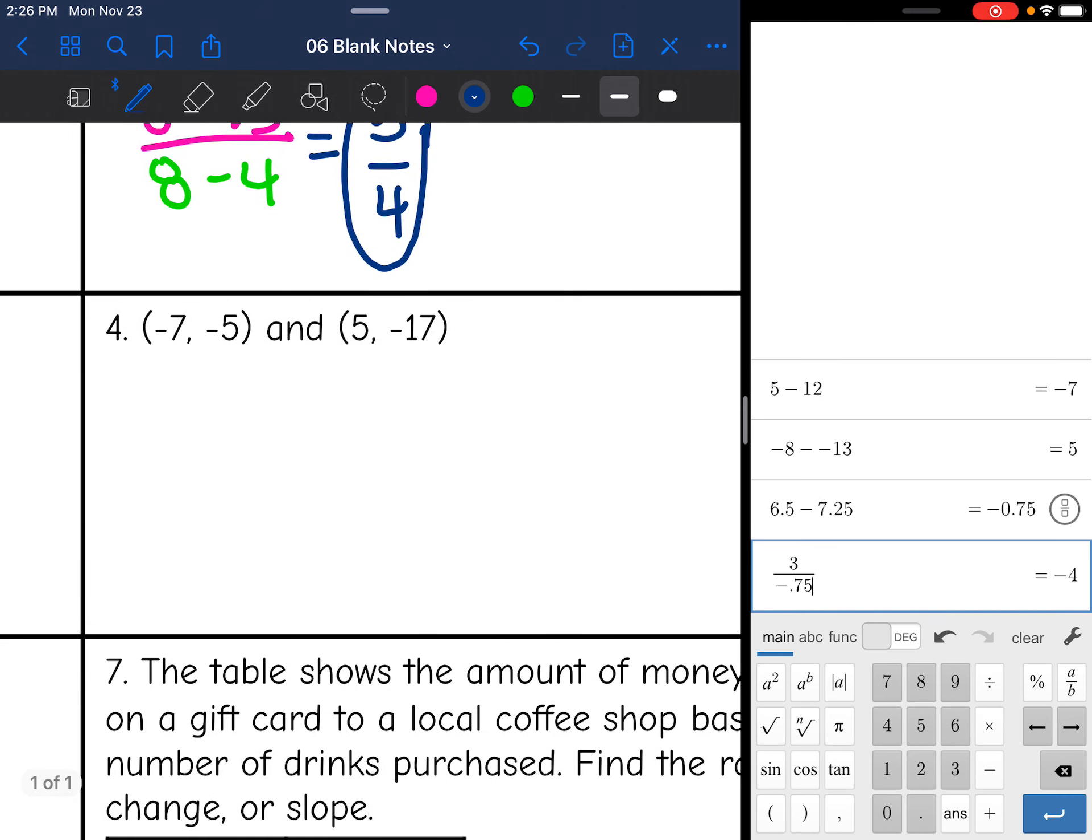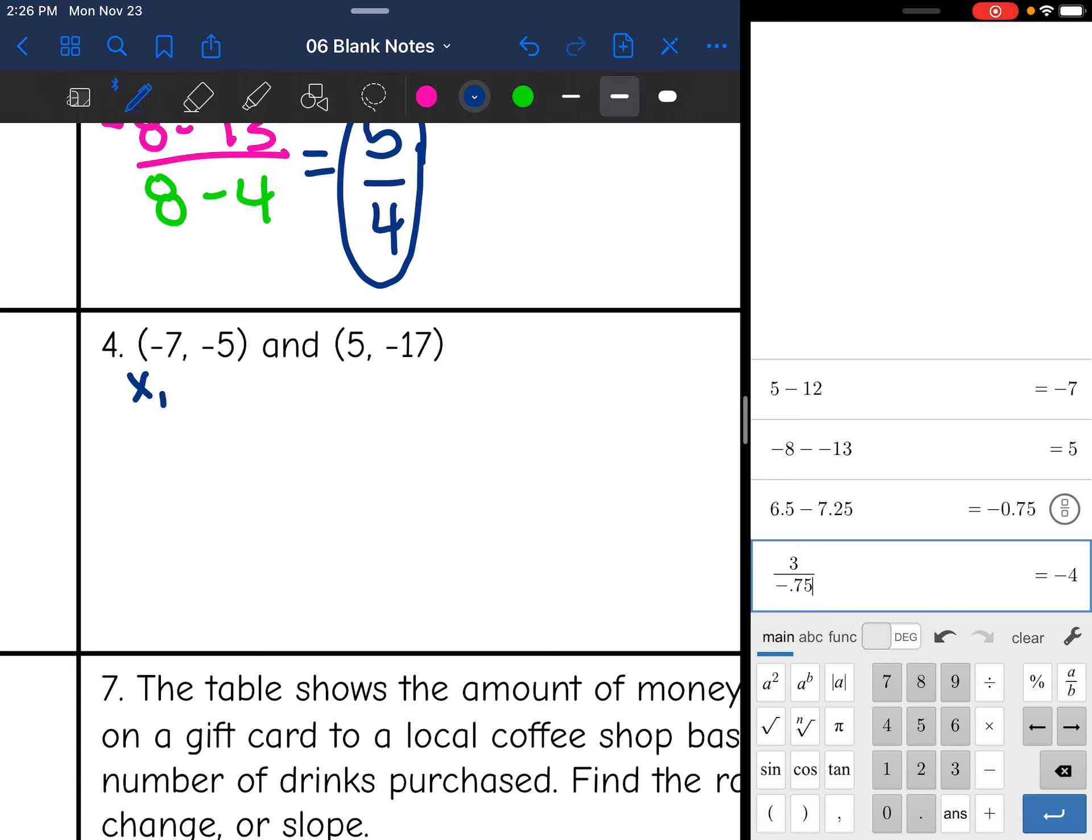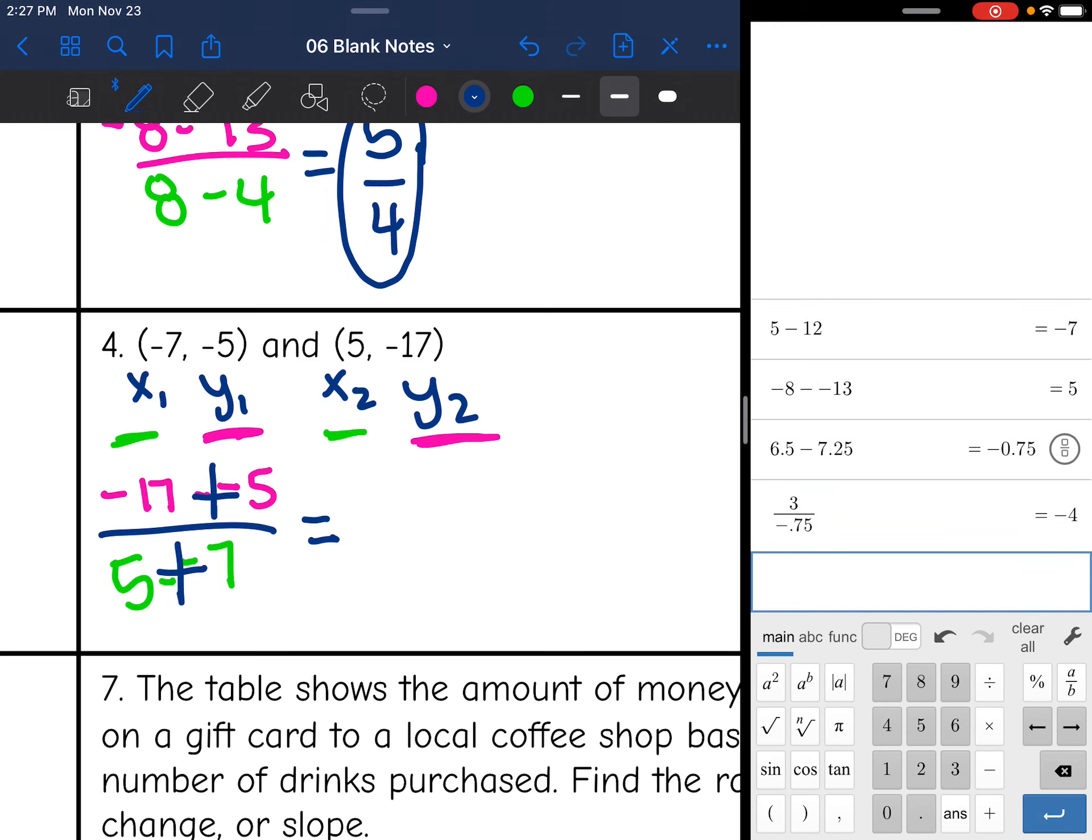Okay, one more set of ordered pairs. Again, I'm just going to label them x1, y1, x2, y2. And we have those negatives. So be careful. I'm going to do y2 minus y1 on top. So negative 17 minus negative 5 is on the top for the y's. And then on the bottom, I have x2 minus x1. So 5 minus negative 7. And again, you can change that to a plus, because minus a negative is the same thing as adding a positive. And then that's a little bit easier to type into the calculator. Negative 17 plus 5 is negative 12. And then 5 plus 7 is 12. And negative 12 divided by 12 is negative 1. So the slope is negative 1.